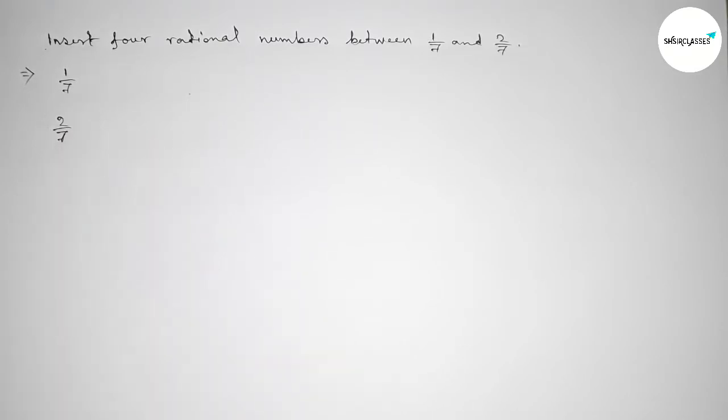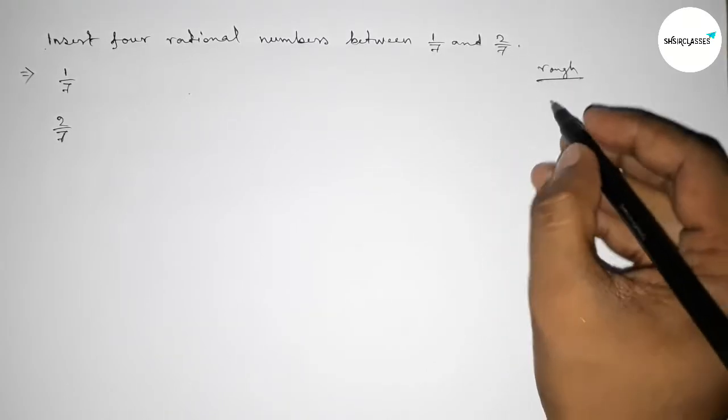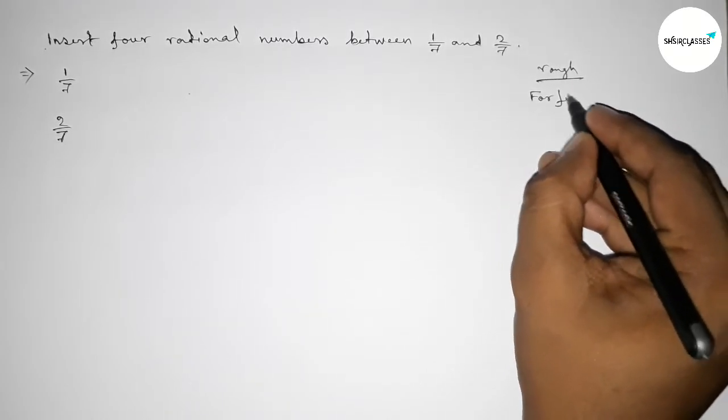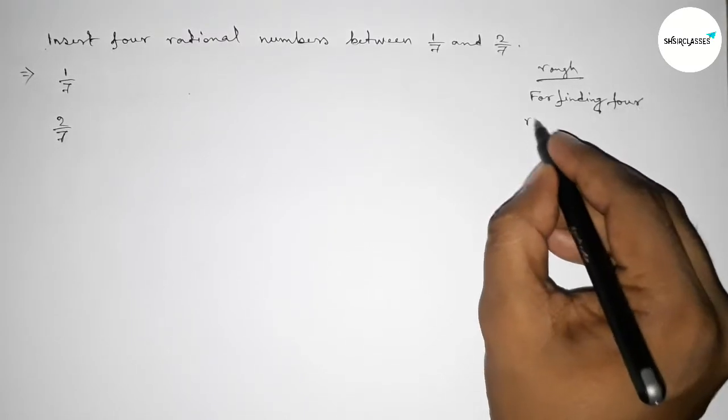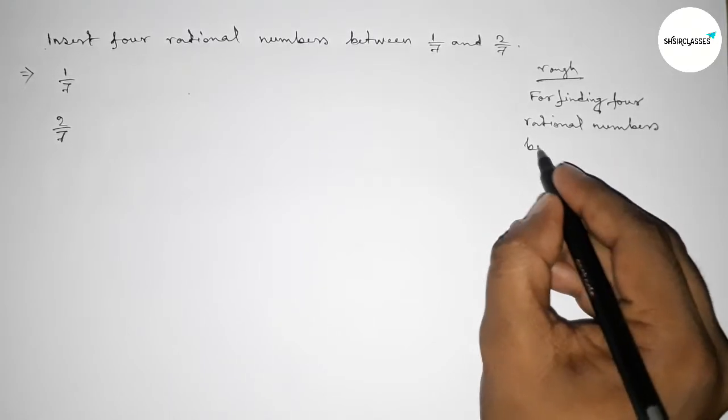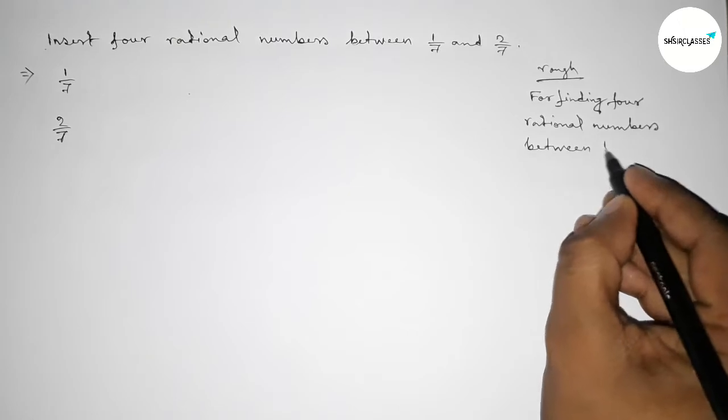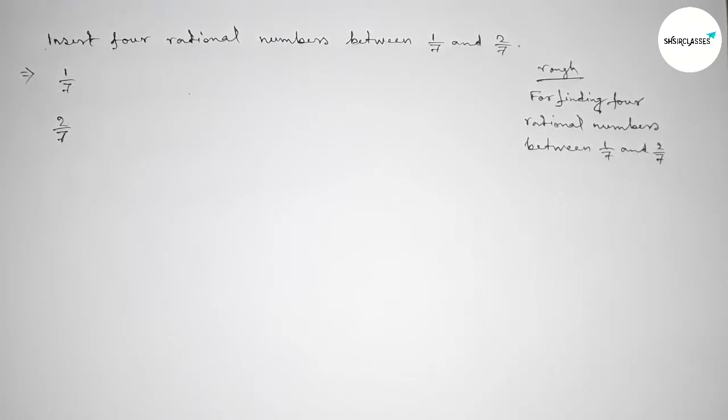Here the denominator of both numbers are the same. So now, roughly discussing here some important calculation. For finding four rational numbers between 1 over 7 and 2 over 7, we have to follow this method.